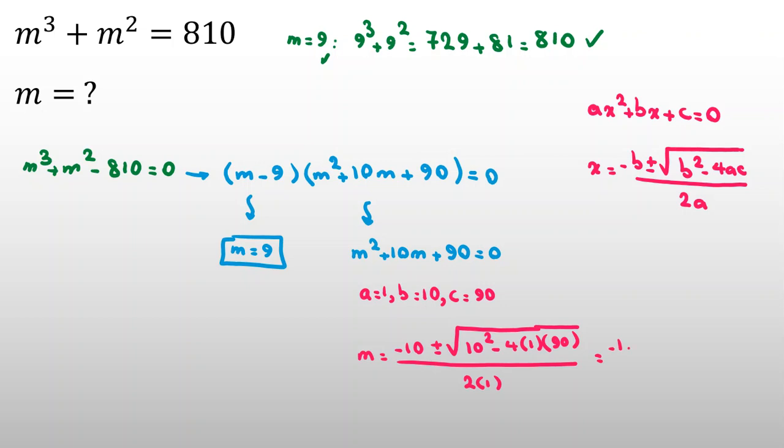It will be negative 10 plus minus, 10 squared is 100 minus 4 times 90, 360, over 2.